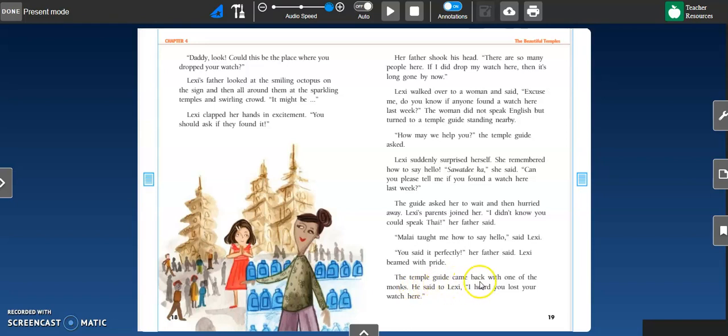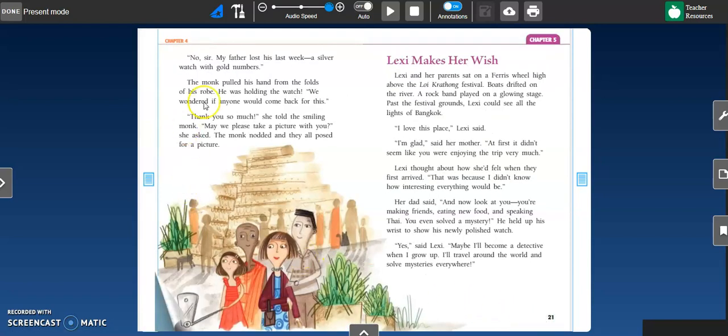The temple guide came back with one of the monks. He said to Lexi, I heard you lost your watch here. No, sir. My father lost his watch last week. A silver watch with gold numbers. The monk pulled his hand from the folds of his robe. He was holding the watch. We wondered if anyone would come back for this. Thank you so much, she told the smiling monk. May we please take a picture with you? She asked. The monk nodded and they all posed for a picture.